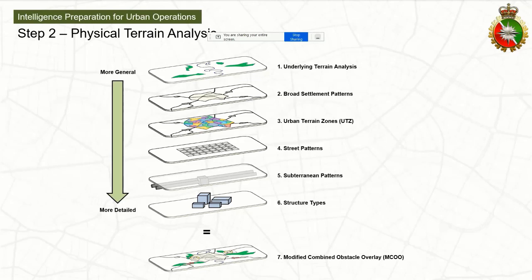Then we take a look at structure types in more detail — this is much more at subordinate levels of command looking at individual building types, scaling from the more general to the more detail. Last, you develop the modified combined obstacle overlay, the MCOO. It's not going to look like one single map overlay — there's just way too much information to convey. The end result is the necessary mapping products that commanders need in order to make their plans.